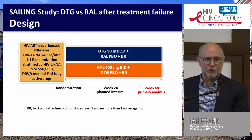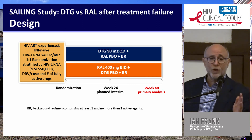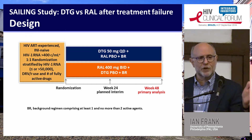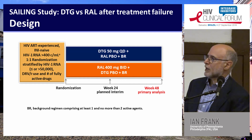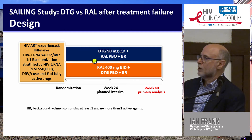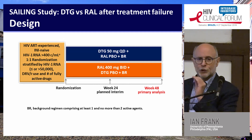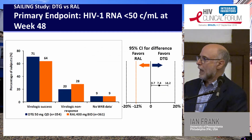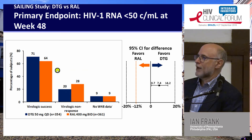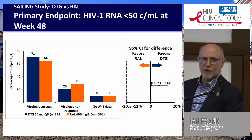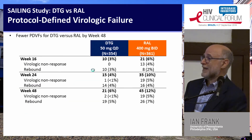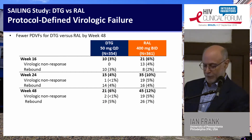Comparing dolutegravir to raltegravir in people with virologic failure, we see superior outcomes with the second-generation drug. In this study, people with virologic failure and no integrase inhibitor resistance were randomized to get dolutegravir or raltegravir plus an optimized background regimen — usually with boosted darunavir and other nukes. Not surprisingly, people do better on the second-generation integrase inhibitor compared to the first generation. By week 48, the rate of virologic failure was 12% in the raltegravir group and half that rate in people who got dolutegravir.